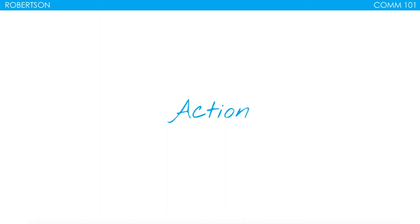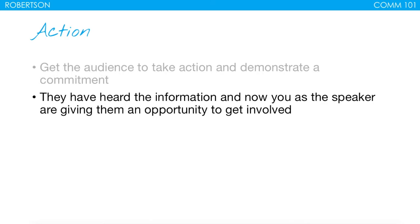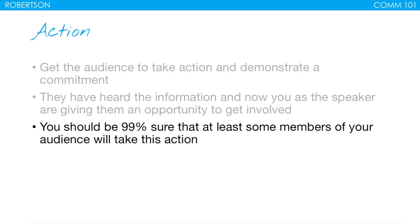The last step in Monroe's Motivated Sequence is the action step. The action step gets the audience to take action and demonstrate commitment. Now that you've shown there's a problem, here's how to solve it, and here's what life would look like after taking that action — now we get people involved right now. You should be 99% sure that at least some members of your audience will take this action. If you can't say that at least a couple people are guaranteed to do what you're asking, then your speech is put together incorrectly and isn't delivering what your audience needs.